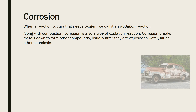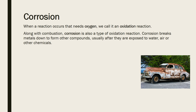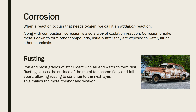A great example of corrosion that you've probably seen before is rusting. Iron and most grades of steel react with air and water to form rust. Rusting causes the surface of the metal to become flaky and fall apart, allowing rusting to continue to the next layer down, and over time this makes the metal thinner and weaker.